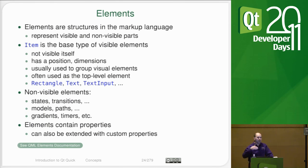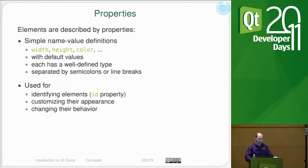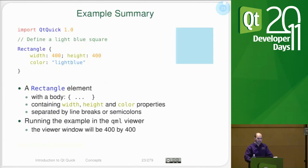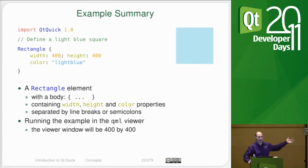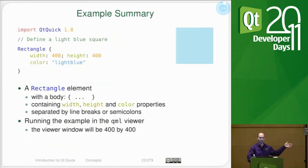You can make your own items and you can inherit from items and extend them with properties and functions. In fact, even in this simple example with a rectangle, we're actually making a specialization of a rectangle right here, because we're making an instance and changing its properties. If we put this into its own file, we'll find out that we have just made our own item.